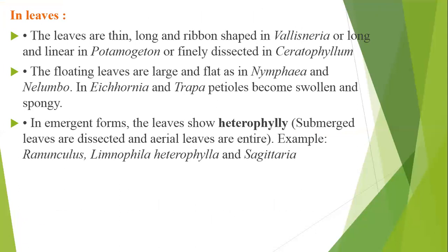The leaves are thin, long and ribbon-shaped in Vallisneria, or long and linear in Potamogeton, or finely dissected in Ceratophyllum. Leaves are different in different plants. In Vallisneria: thin, long and ribbon-shaped. In Potamogeton: long and linear.